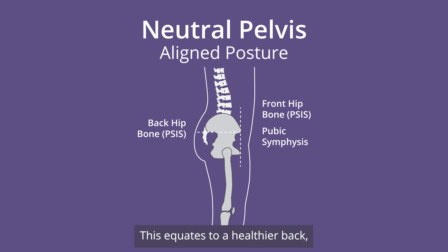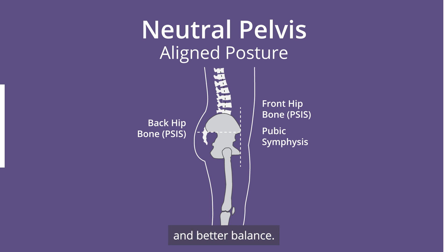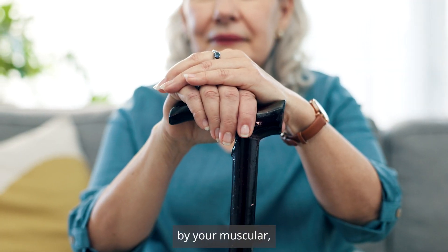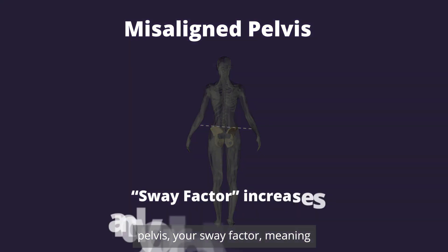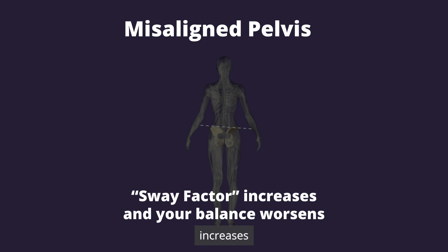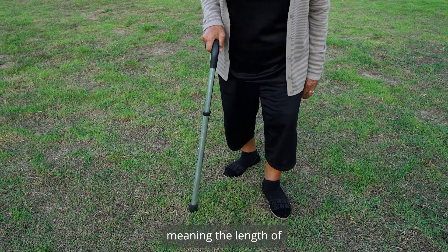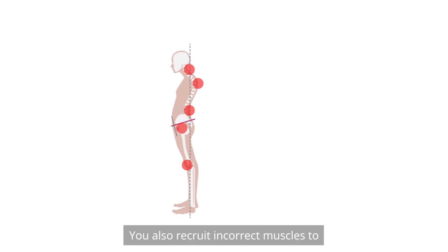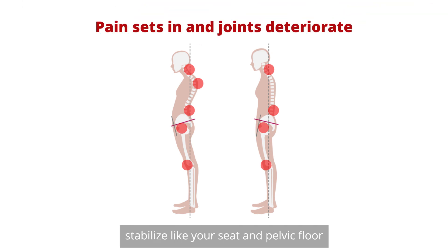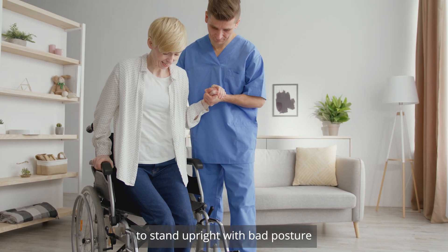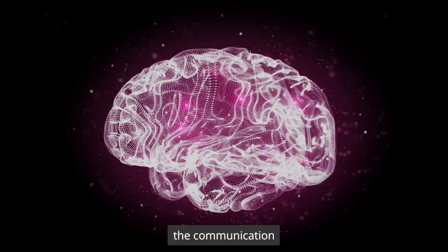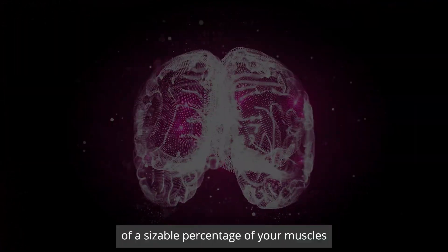This equates to a healthier back, a more functional pelvic floor, and better balance. Your balance is very affected by your musculoskeletal organization and strength. If you have a misaligned pelvis, your sway factor — meaning your natural movement while standing — increases and your balance worsens. The length of your gait, meaning the length of your steps, also shortens. You also recruit incorrect muscles to stabilize, like your seat and pelvic floor, and put undue pressure on your neck, back, hips, and knees, which leads to the deterioration of joints and spine.